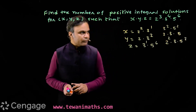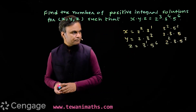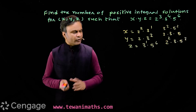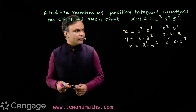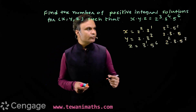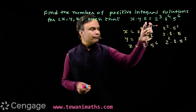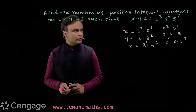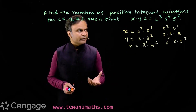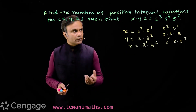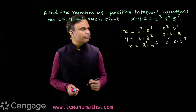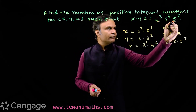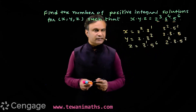We have so many solutions. What exactly are we doing? We are actually distributing prime factors 2, 3, and 5. We have prime factor 2 appearing 3 times, prime factor 3 appearing 4 times, and prime factor 5 appearing 6 times.